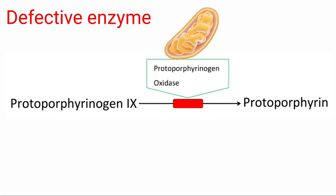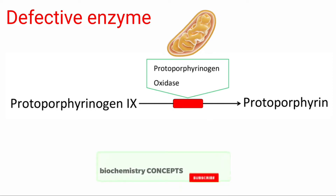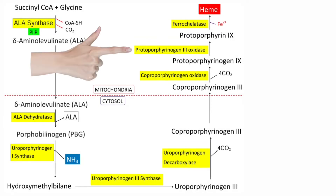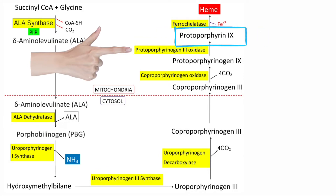The enzyme deficiency is protoporphyrinogen oxidase, which is present in the mitochondria. This enzyme converts protoporphyrinogen 9 to protoporphyrin 9. Due to deficiency of this enzyme, there is a block in this reaction, and protoporphyrin 9 required for the synthesis of heme is not produced.